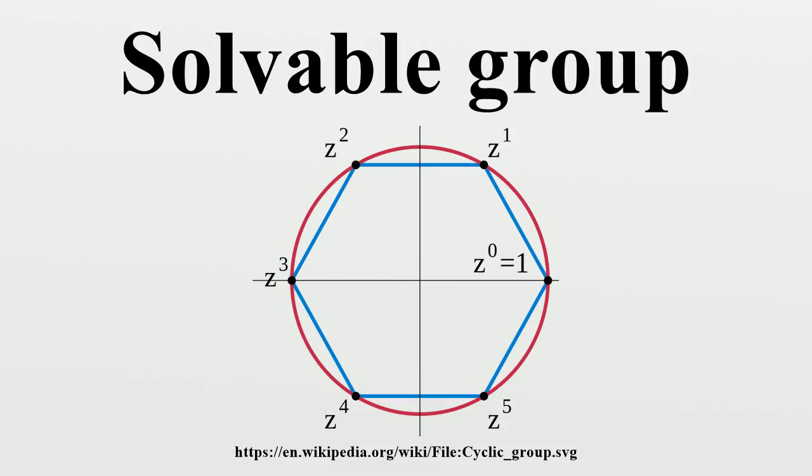The celebrated Feit-Thompson theorem states that every finite group of odd order is solvable. In particular this implies that if a finite group is simple, it is either a prime cyclic or of even order. Any finite group whose every piece of Sylow subgroups is cyclic is a semi-direct product of two cyclic groups, in particular solvable. Such groups are called Z groups.